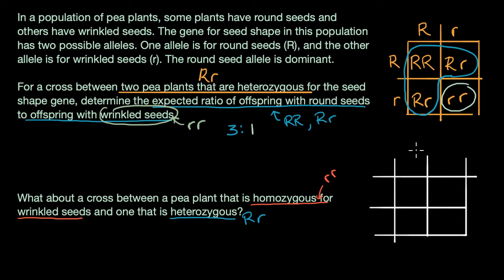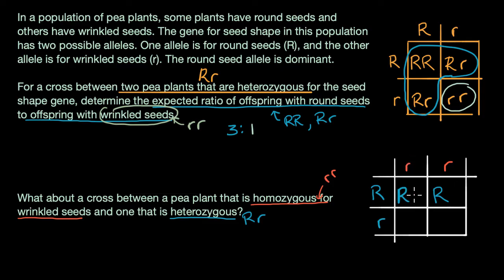Let's put the homozygous parent up here. They could contribute a lowercase r, or they could contribute a lowercase r — they're going to contribute one of these two. Then the heterozygous parent can contribute capital R, the dominant allele, or they could contribute lowercase r. So the equally likely genotype scenarios are: capital R, lowercase r — where we get capital R from the heterozygous parent and lowercase r from the homozygous parent — and lowercase r, lowercase r — where we get the wrinkled seed allele from both parents.